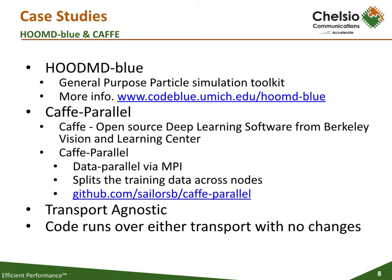The first benchmark is HOOMD-Blue from the University of Michigan, a general-purpose particle simulation toolkit. The second benchmark is Caffe Parallel — Caffe is an application that does deep learning primarily for image recognition, and Caffe Parallel extends the original Caffe to run using MPI, in our case OpenMPI, so that training is split amongst the nodes in the cluster. In each case, to get the application running, all we needed to do was follow the included build instructions. No changes to the actual code were required at all. Both HOOMD-Blue and Caffe Parallel ran using iWARP as if running with one of the other transports — I cannot stress the importance of this.